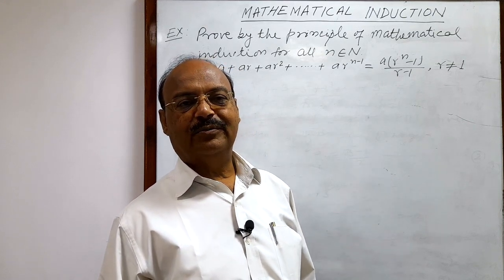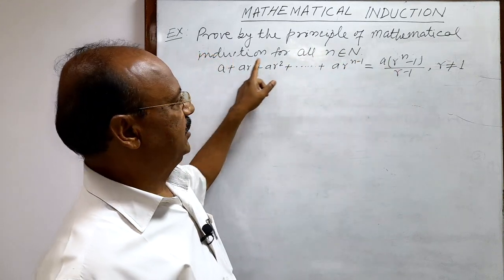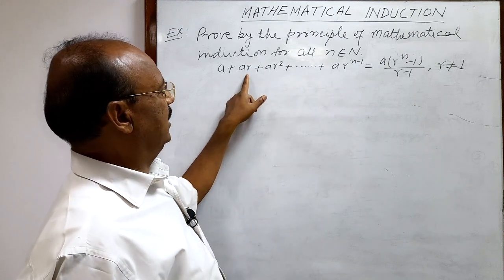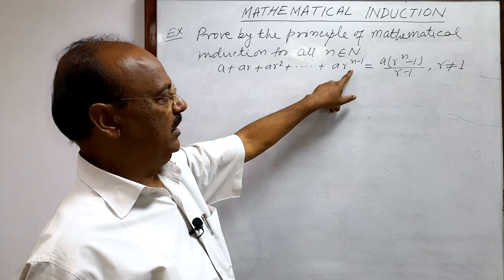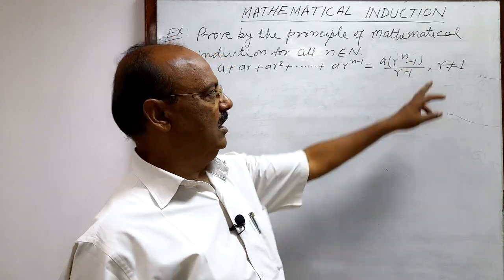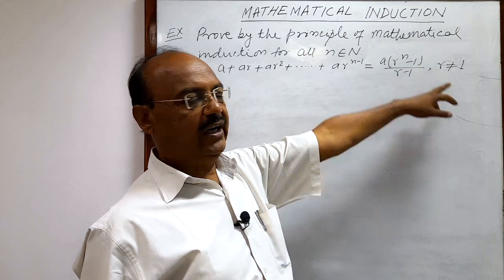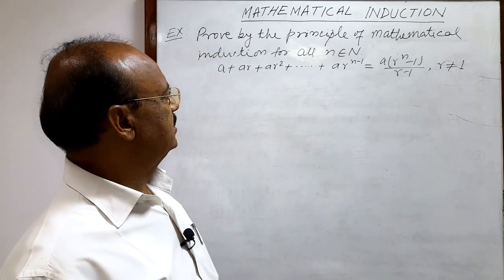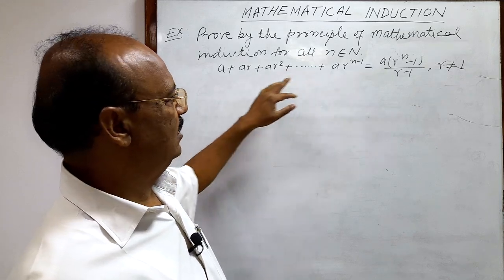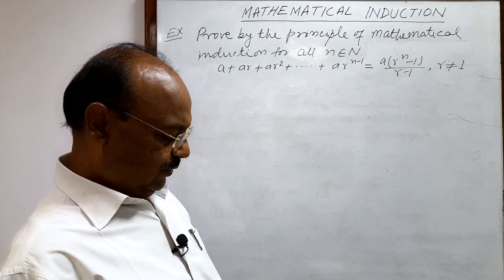Here let us see a very interesting question from the chapter mathematical induction. The question is: prove by the principle of mathematical induction for all n belonging to the set of natural numbers. The mathematical statement given is a + ar + ar² + ... + ar^(n-1) = a(r^n - 1)/(r - 1), where r ≠ 1. Otherwise r - 1 = 0 which is undefined, that is why the condition r ≠ 1 is provided. This is the formula for the sum of first n terms of a geometric progression, and we will prove it here.